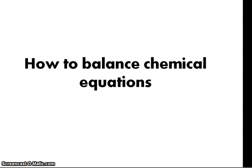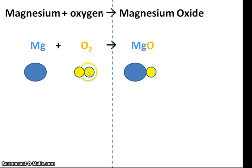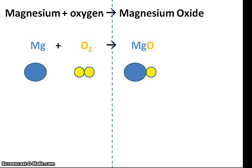This video is all about how to balance equations. I'm going to start with magnesium plus oxygen makes magnesium oxide. I have one atom of magnesium reacting with an oxygen molecule to produce magnesium oxide. This little two means that I have two atoms of oxygen which are bonded together. For this to be a balanced equation, I need to have the same amount of atoms on both sides of the dotted line.